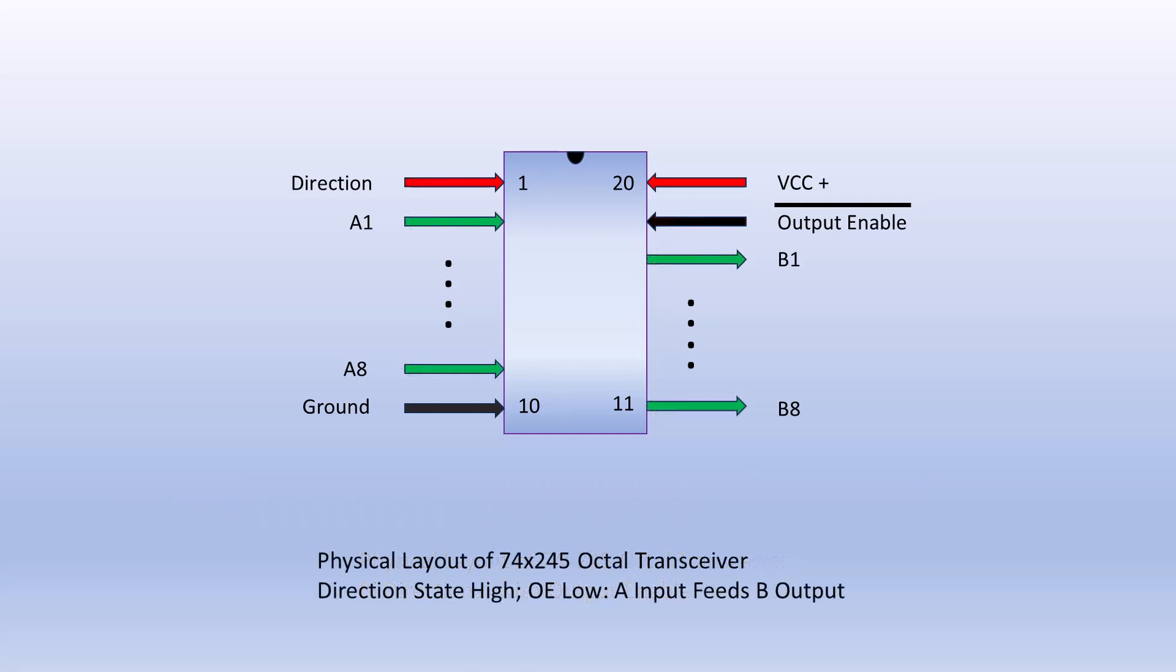Also notice the inversion bar over the output enabled pin. This tells us that its normal enabled state is low and to disable the output we set the pin high.